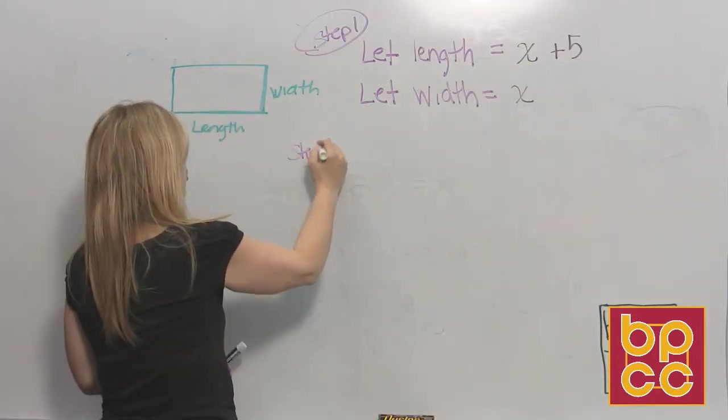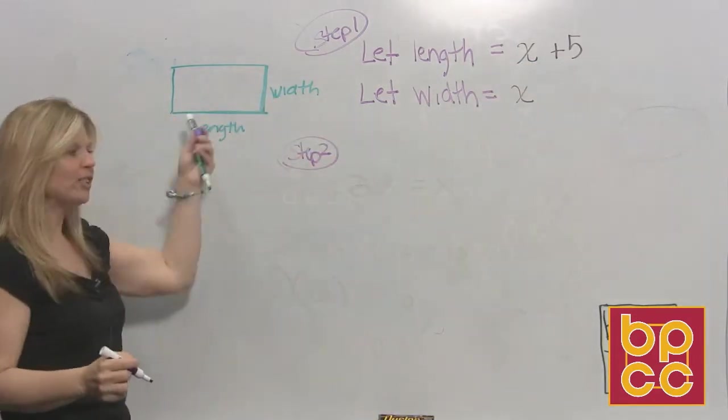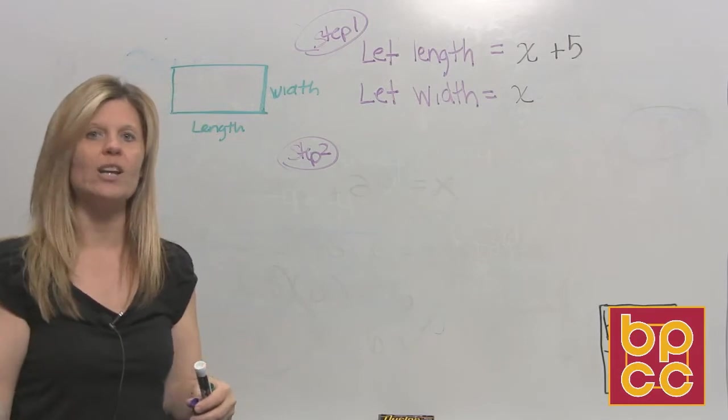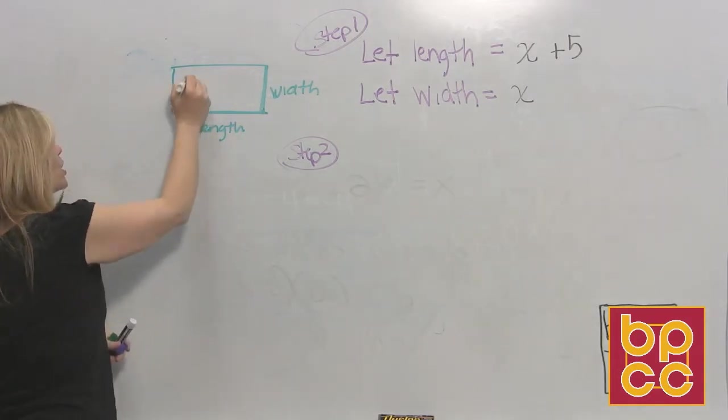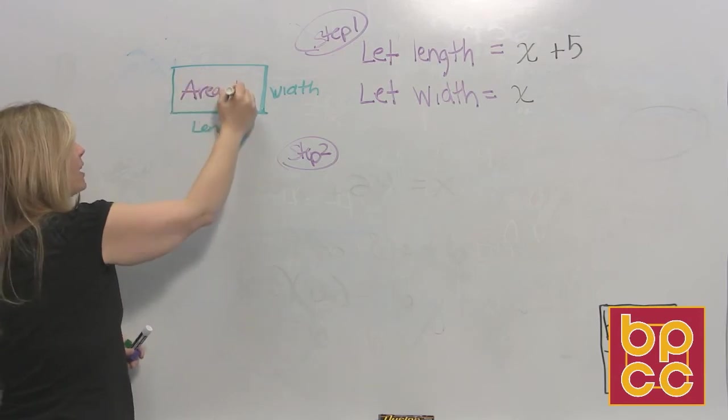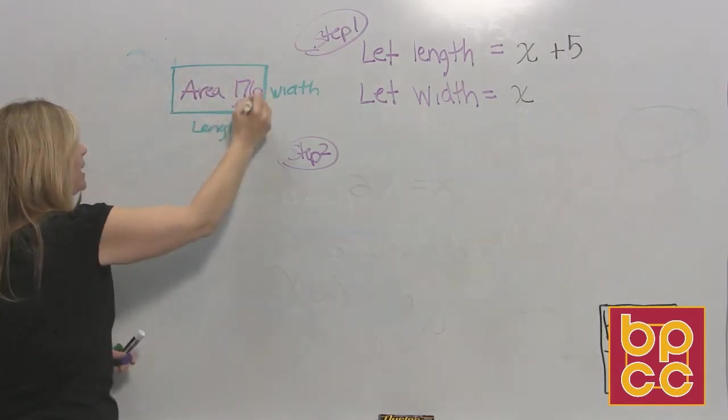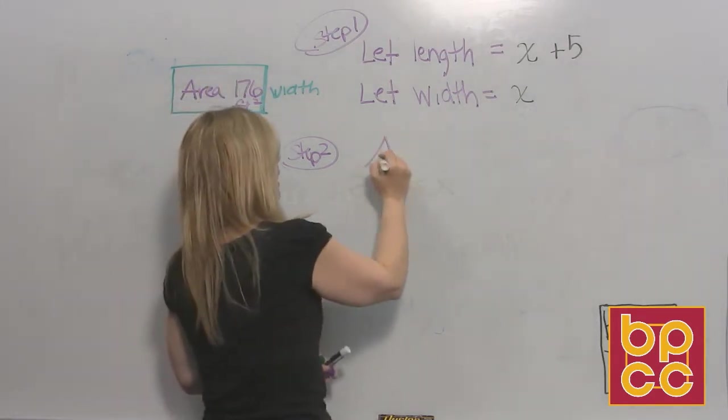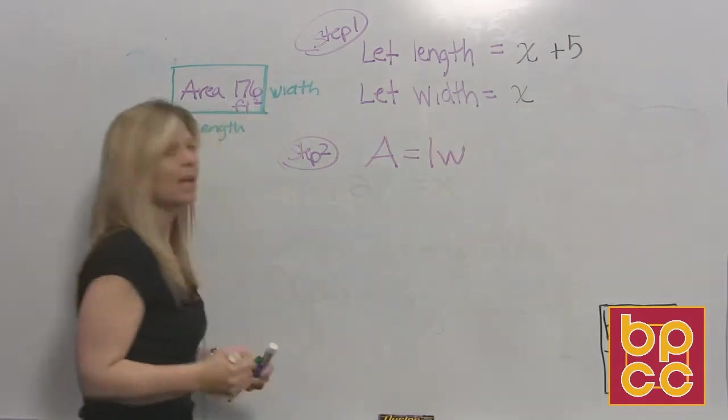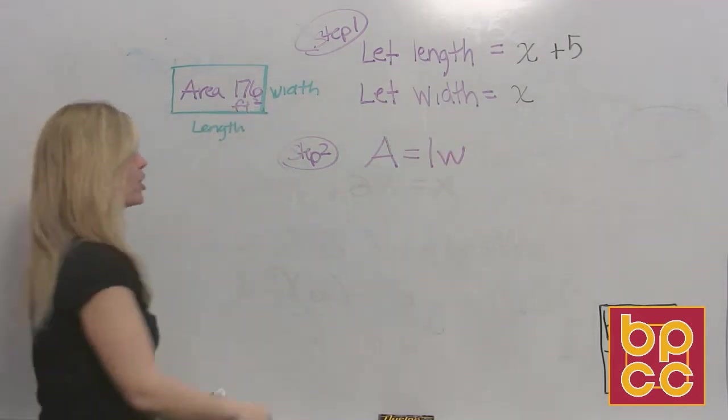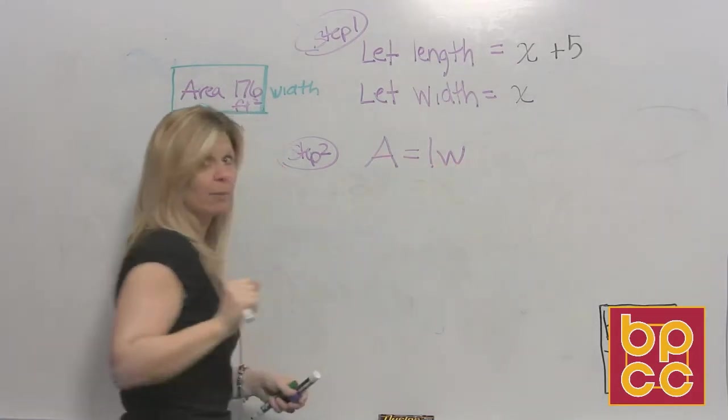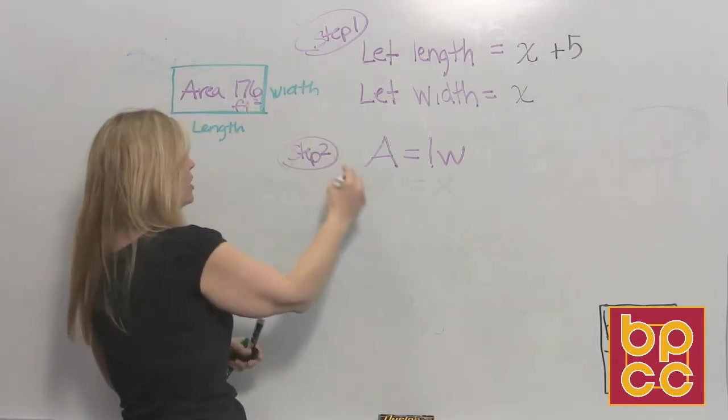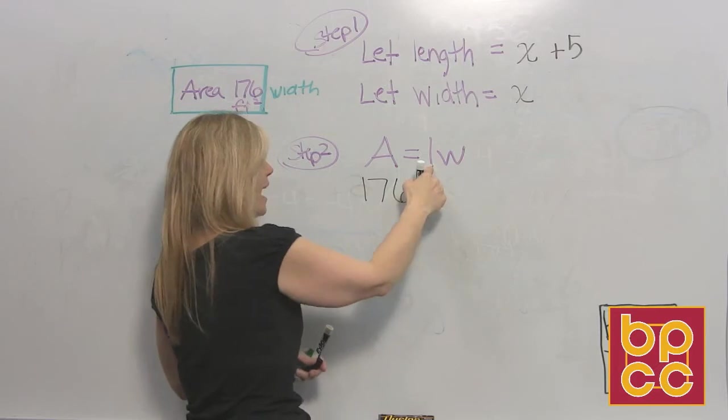Step two is now to write an equation. Well, with shapes, we can only think about formulas. And if you remember from your prior knowledge, a formula is an equation. Which formula are we going to use here? We're going to use the area formula. Because they tell us the area is 176 square feet. And area is how much space is on the inside. So if you remember back, there's a formula. Area equals LW. Formulas are equations. So we're going to replace each of these variables with its information. And then we'll have an equation. So what is area? Well, they told us it's 176.